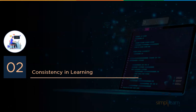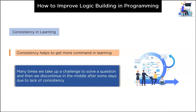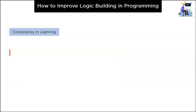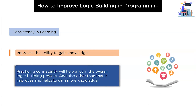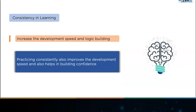Let's move on to the next stage: consistency in learning. Consistency helps to get more command in learning. It is a popular saying that practice makes a man perfect. We often take up a challenge to solve a question and then discontinue in the middle — this should not happen. Practicing consistently improves the ability to gain knowledge, helps in the overall logic building process, increases development speed, and also helps in building confidence levels in programming.